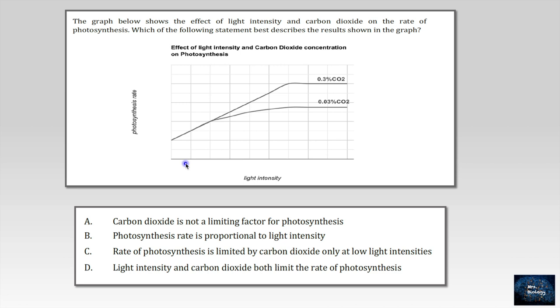What about this question? The graph below shows the effect of light intensity and carbon dioxide on the rate of photosynthesis. Which of the following statement best describes the results shown in the graph? Let's see here. Is the light intensity increasing? So logically speaking, the rate of photosynthesis would increase. Even here, if you notice the concentration of the carbon dioxide here is lower than the concentration here. Let's see the statements. A. Carbon dioxide is not limiting factor for photosynthesis. Sure, it's wrong. B. Photosynthesis rate is proportional to light intensity. That's right. C. Rate of photosynthesis is limited by carbon dioxide only at low light intensities. No, not only. D. Light intensity and carbon dioxide both limit the rate of photosynthesis. I think this is the best choice to choose it.